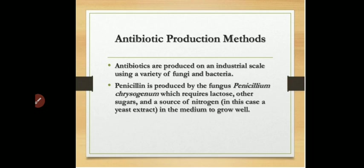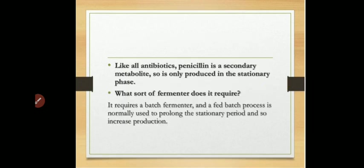Generally, Penicillium chrysogenum requires lactose and other sugars as a carbon source, as well as a nitrogen source, for its proper growth and development. Penicillin is a secondary metabolite, so it is generally produced only in the stationary phase.